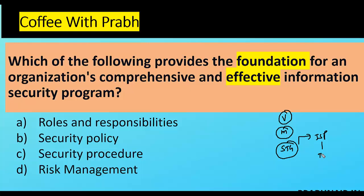Based on the information security policy, we create an information security program. So you can see that policy is governance. The question asks which provides the foundation for a comprehensive, effective information security program. Security policy is the most important thing — it is the law of an organization. Any system you want to introduce must be backed and supported by the policy.